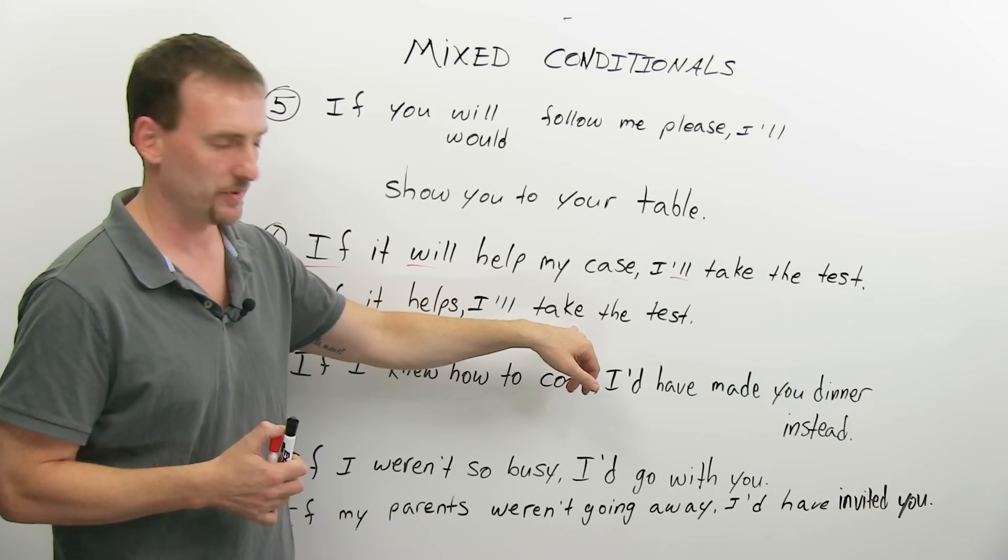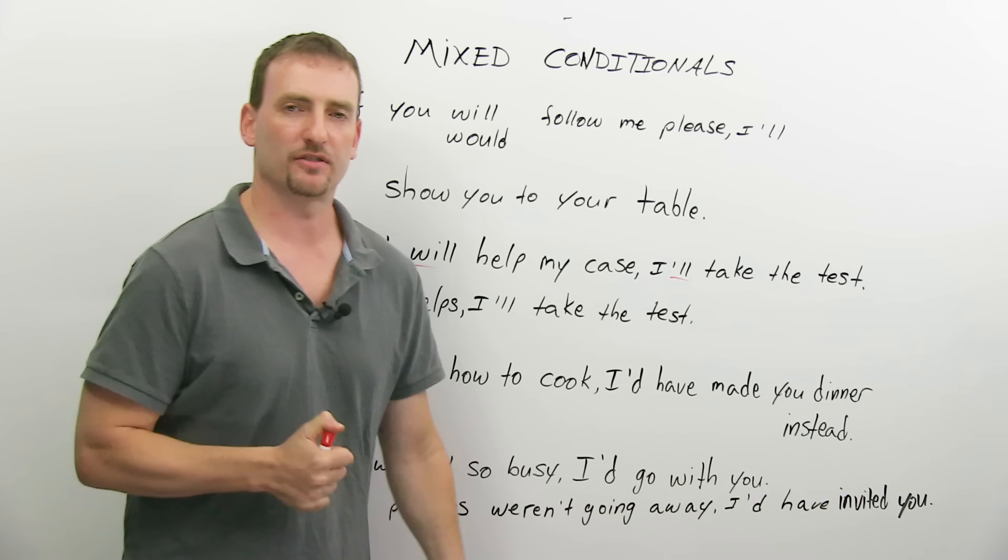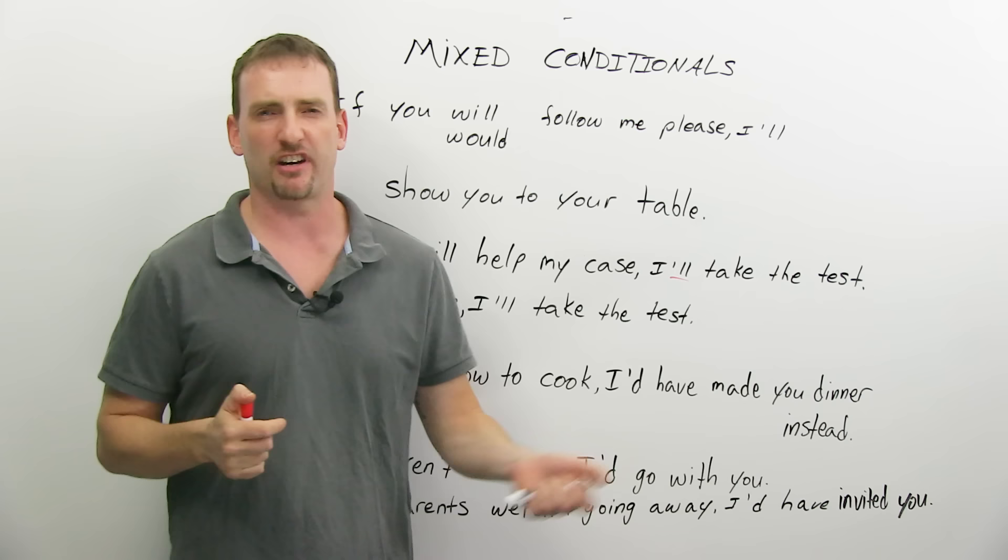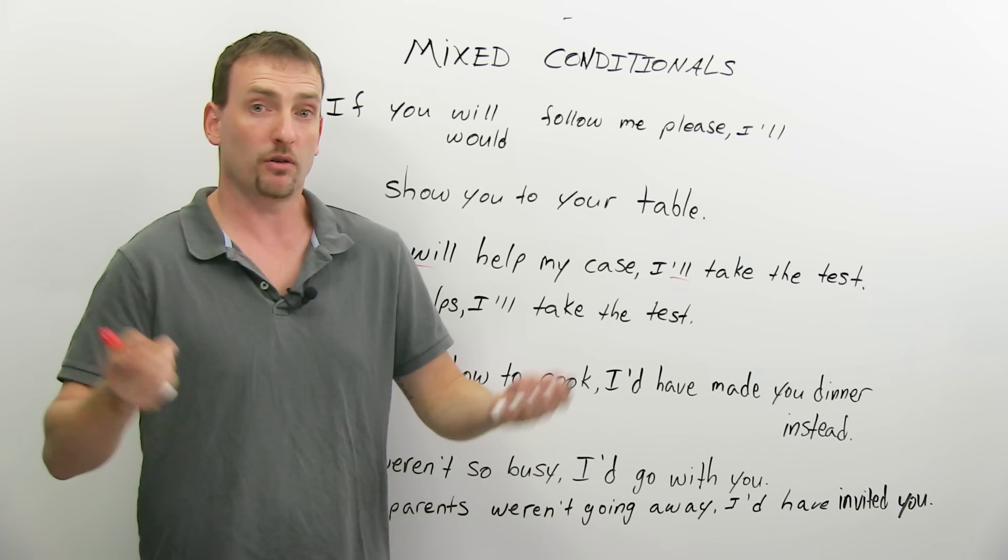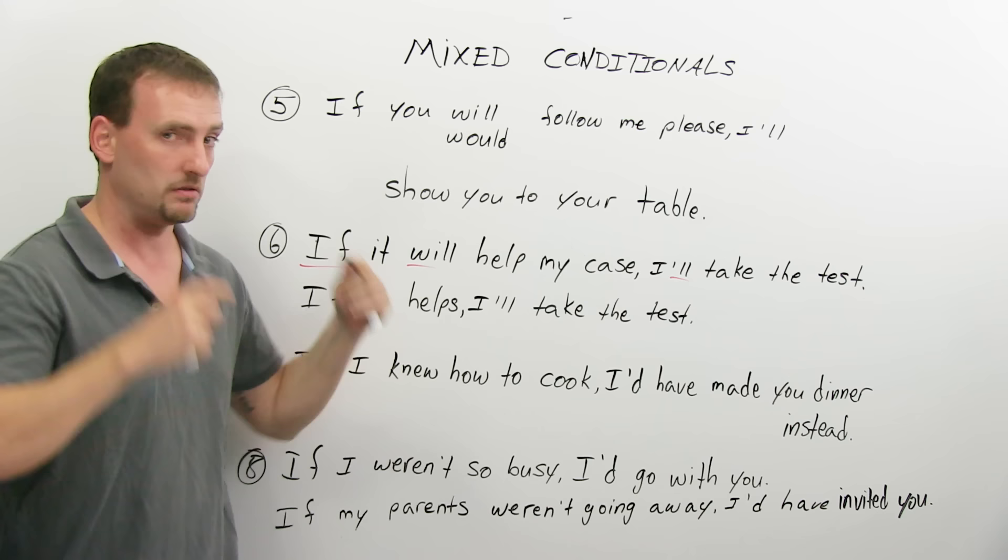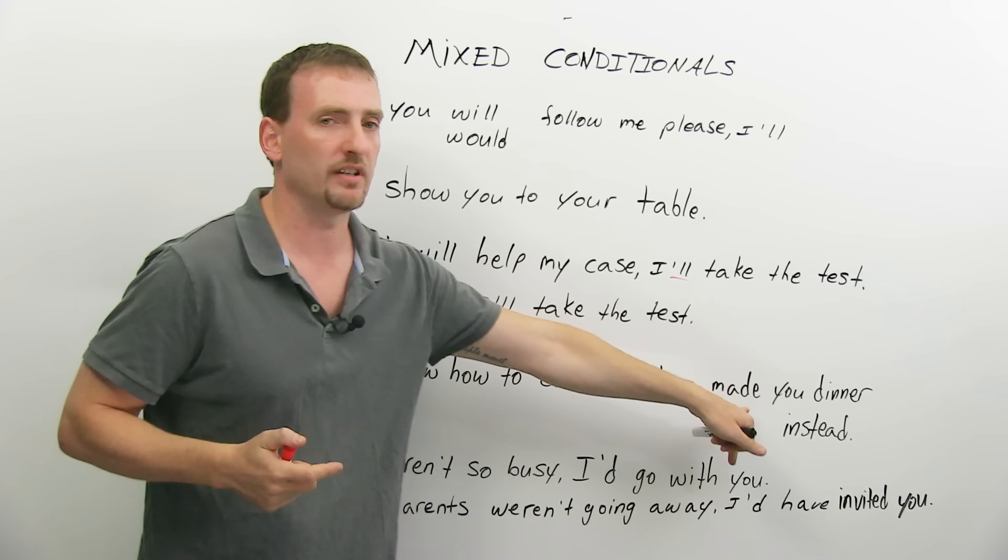Now, if I knew how to cook, I'd have made you dinner instead. So, last week, I took a girl out on a date. We went to a restaurant. The food was terrible. She thought, you know, maybe I'm not such a good guy. She doesn't want to date me again. And I say, no, no, no. I'm a very good guy. I took you to a restaurant because I don't know how to cook. If I knew how to cook, unreal, imaginary, I would have taken you to dinner last week instead.